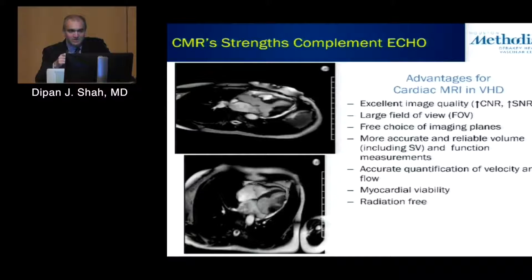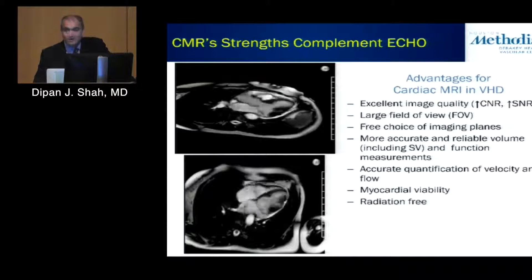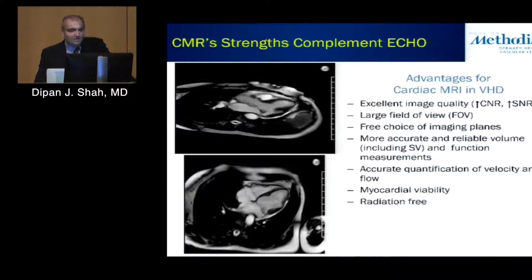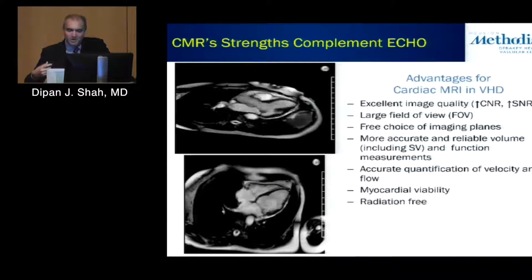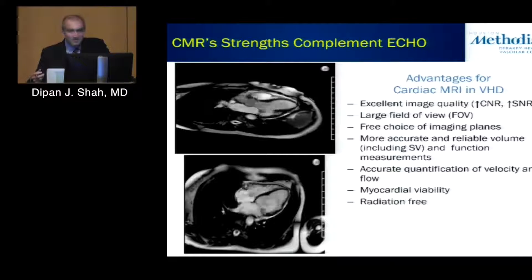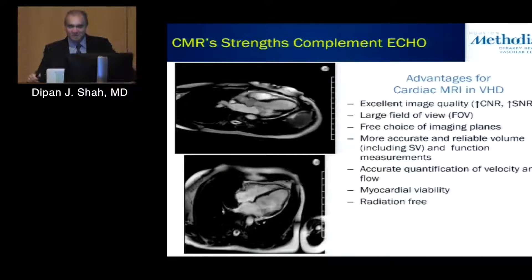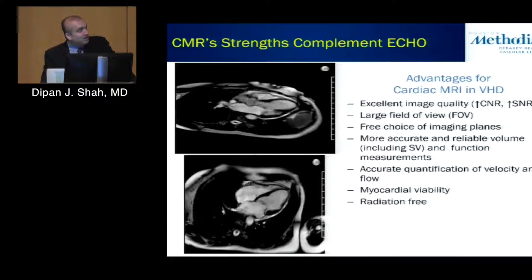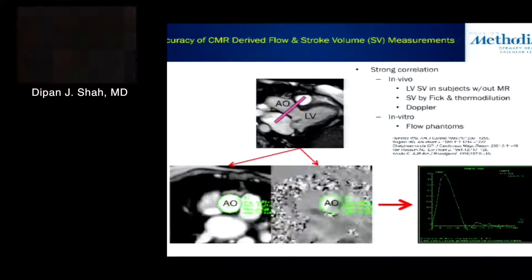These are scenarios in which CMR could potentially be useful when there is a discordance. What are some of the strengths of CMR? One is you get very high quality images, very high signal-to-noise as well as contrast-to-noise ratio, and a nice large field of view. You're not really limited by acoustic windows — as long as the patient can physically fit into the scanner, you can get pretty good quality images. MR also doesn't involve radiation exposure, unlike CT or angiography.